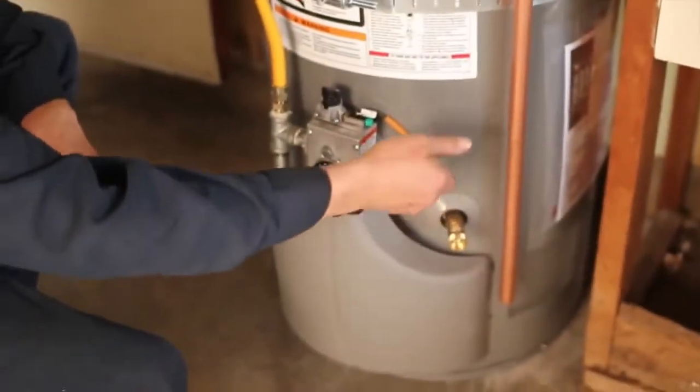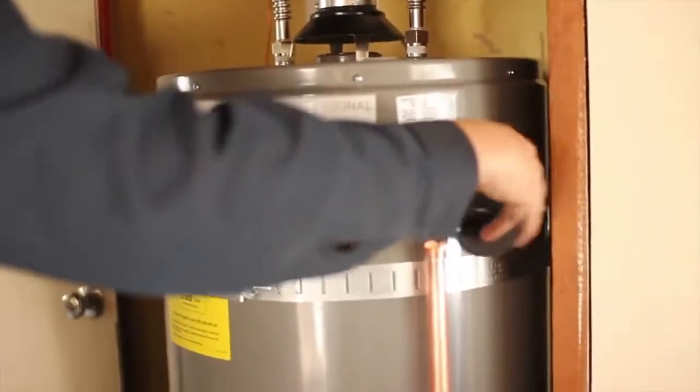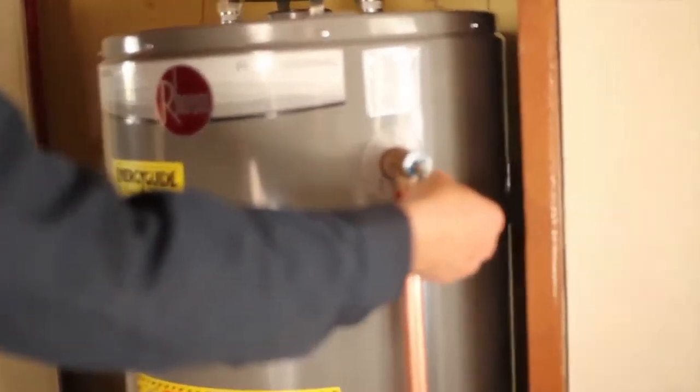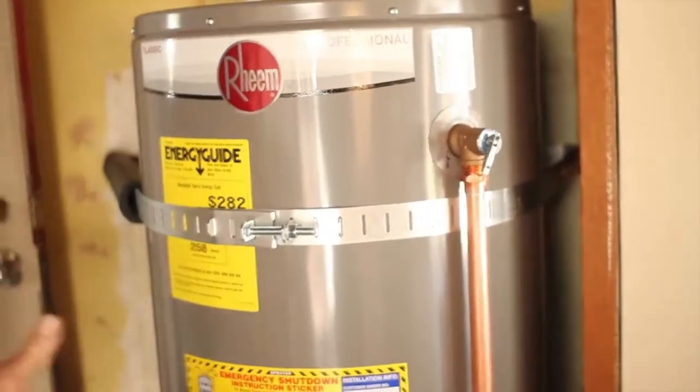Just connect a garden hose to this, open it up. To get some air flow, usually we'll come over to the overflow here and open this valve right here. And that will give it some air flow to have the water heater drain properly.